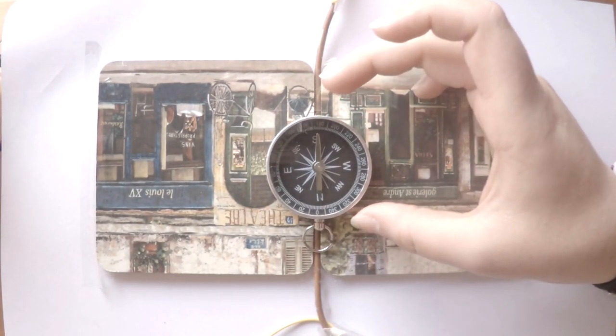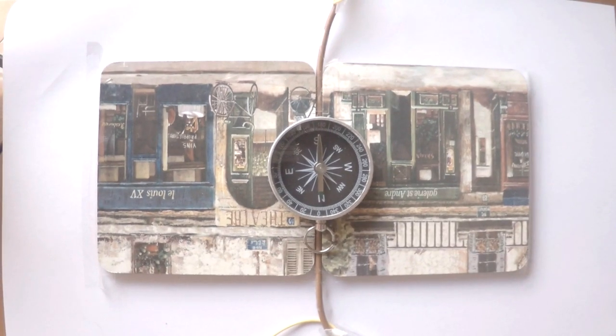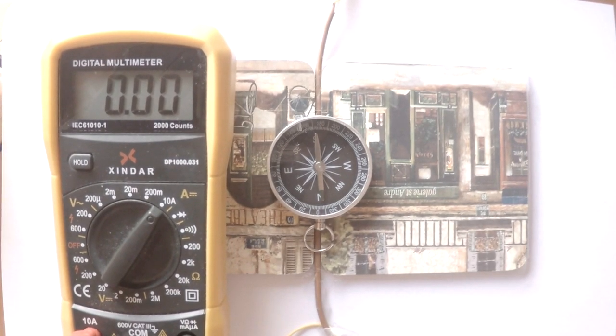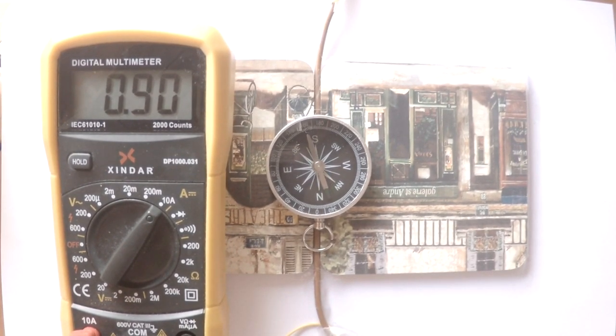As we can see for the moment, when the wire does not have any current, there is no effect on the compass. Then we make some current pass through the cable.